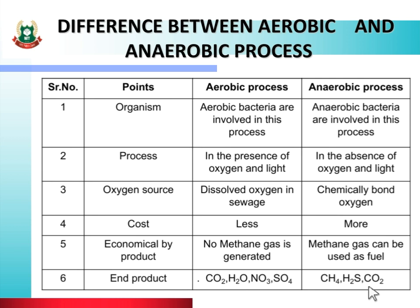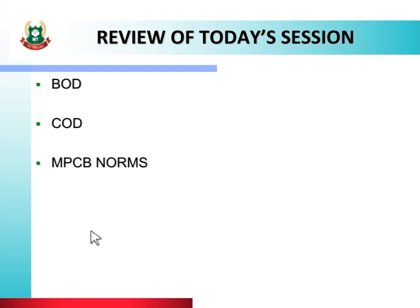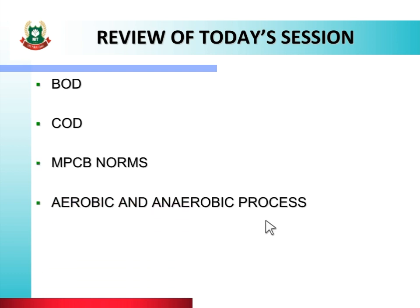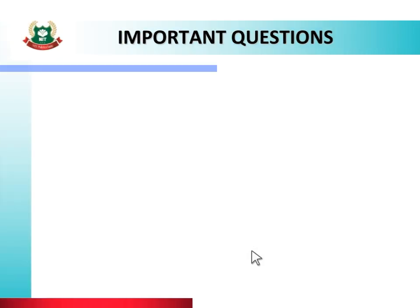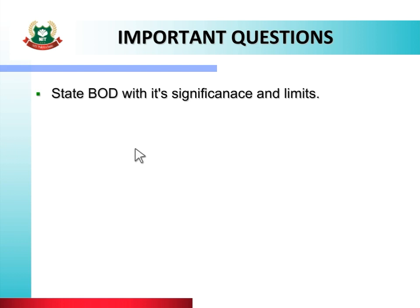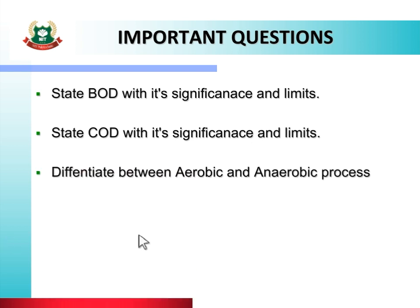In today's session, we studied about BOD, COD, MPCB norms, aerobic and anaerobic process. In next session, we will study about treatment of sewage. Important questions on today's topic are: State BOD with its significance and limits. State COD with its significance and limits. Differentiate between aerobic and anaerobic process.